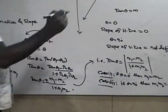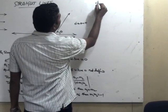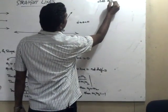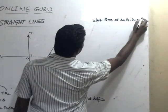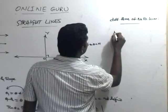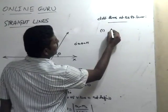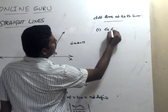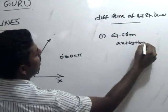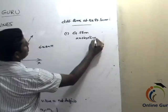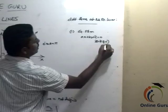Next we discuss different forms of the straight line. The first is the general form: ax + by + c = 0, where a² + b² ≠ 0. This is called a linear equation in x and y.